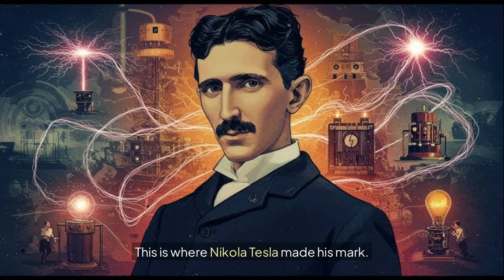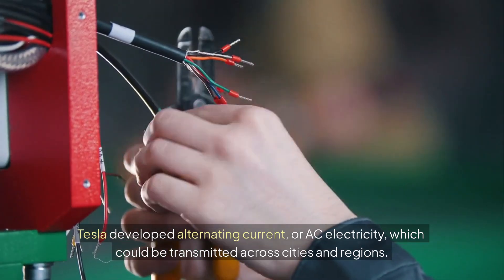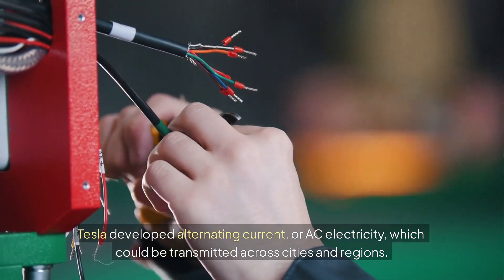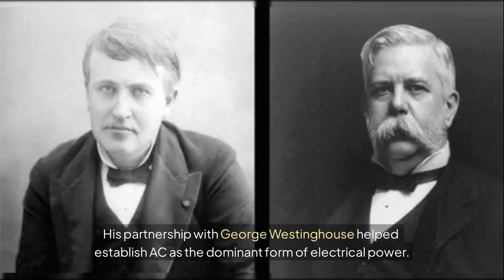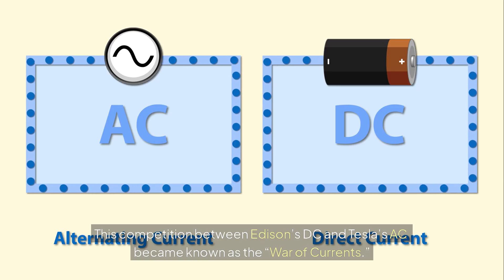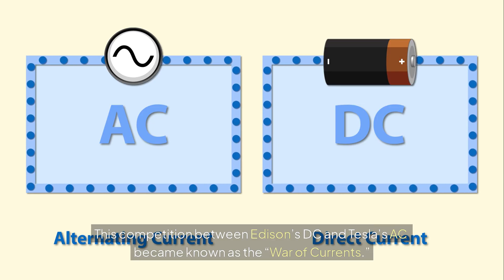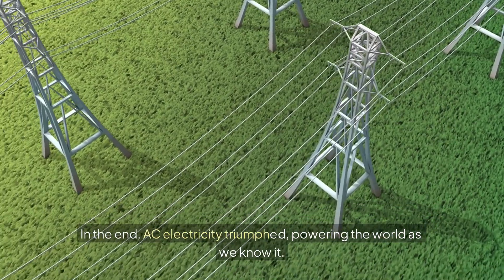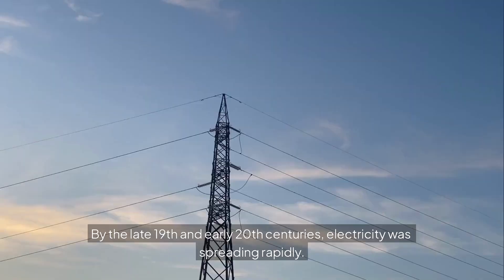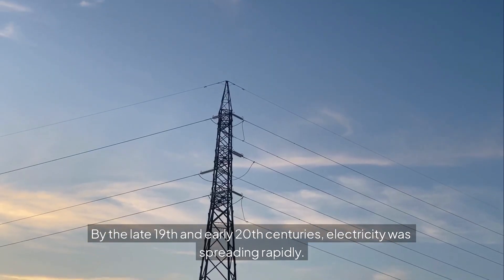This is where Nikola Tesla made his mark. Tesla developed alternating current, or AC electricity, which could be transmitted across cities and regions. His partnership with George Westinghouse helped establish AC as the dominant form of electrical power. This competition between Edison's DC and Tesla's AC became known as the War of Currents. In the end, AC electricity triumphed, powering the world as we know it.